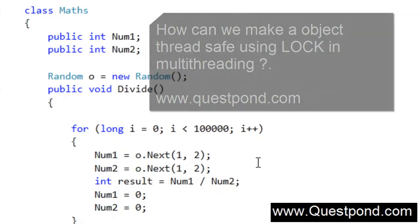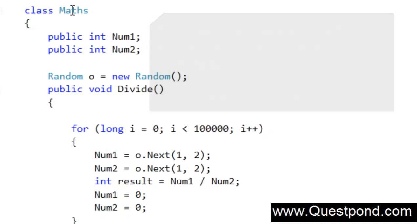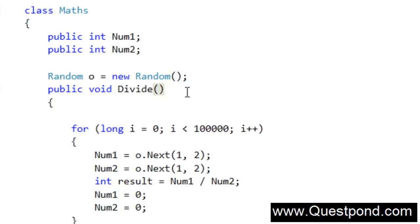In order to understand this terminology, we can see that I have a simple class here called the Maths class, and this Maths class takes two numbers: num1 and num2. There is a divide function here, and this divide function is essentially a big for loop running here.